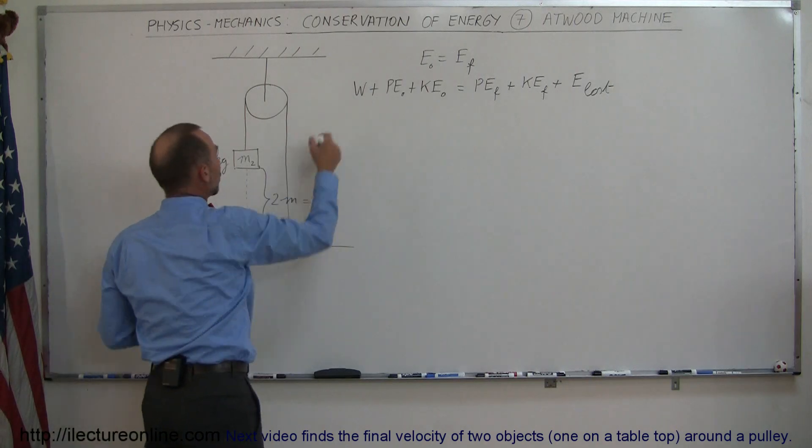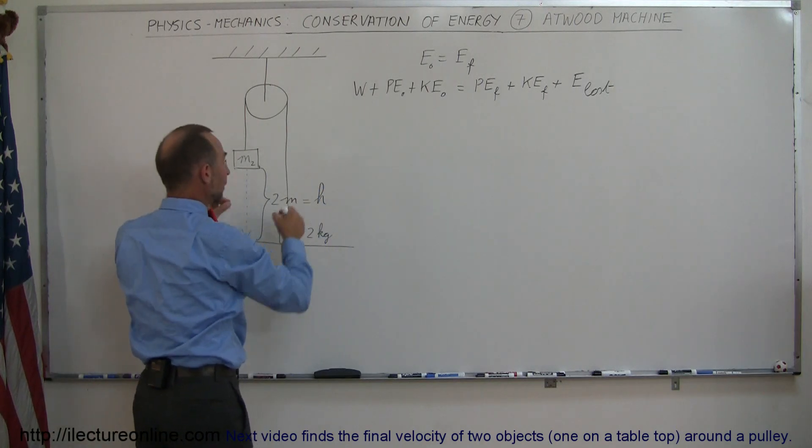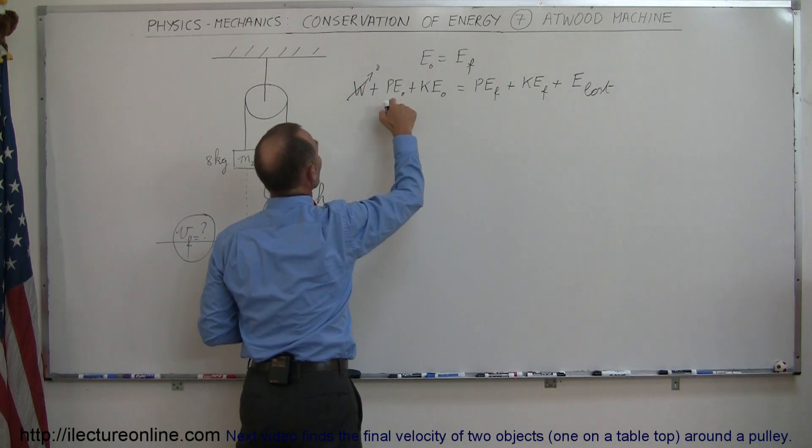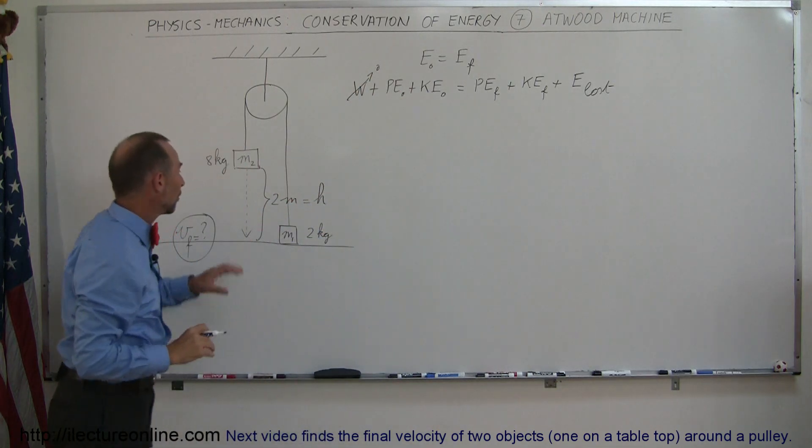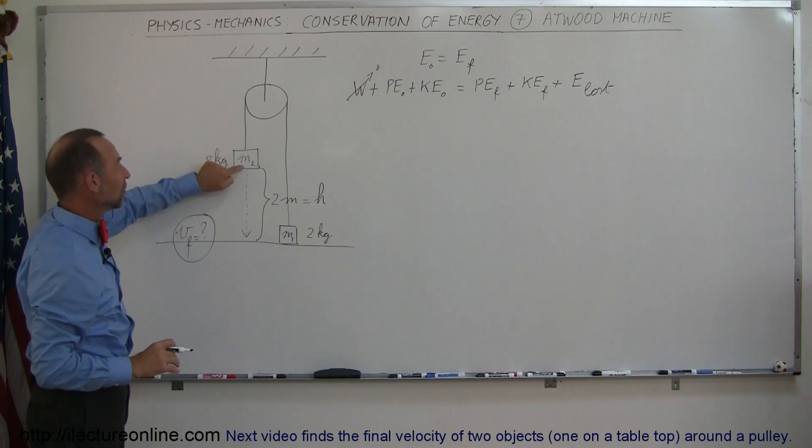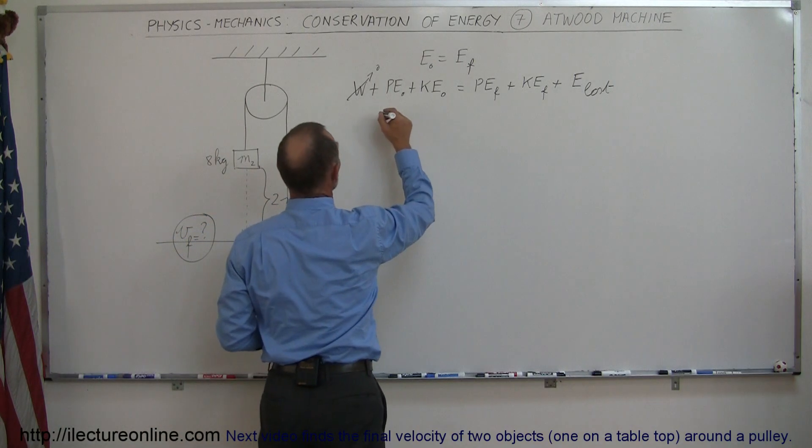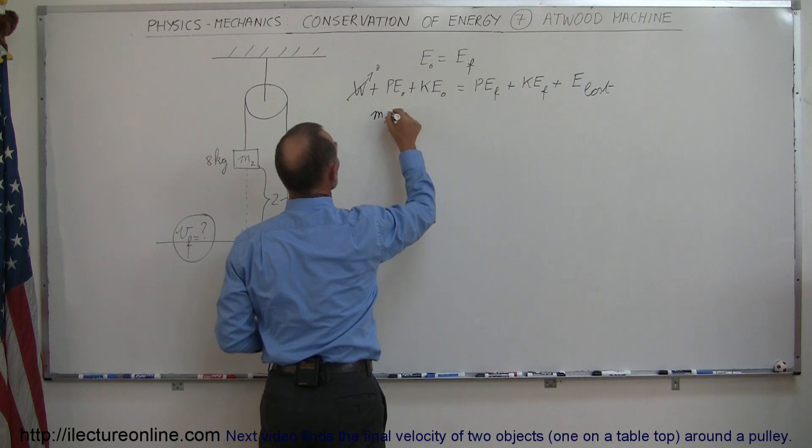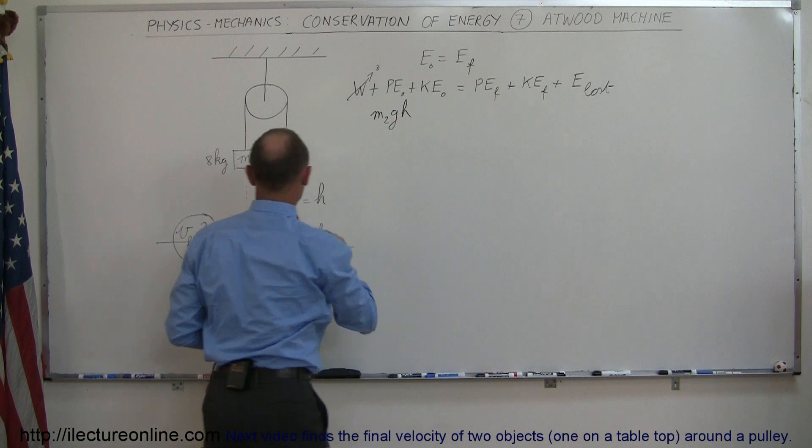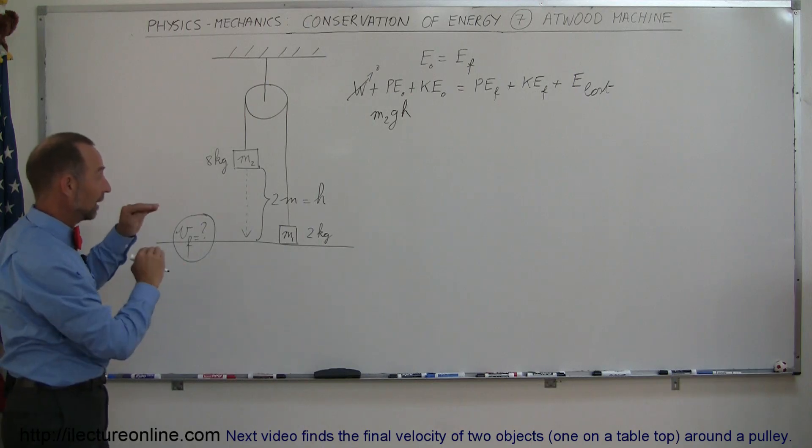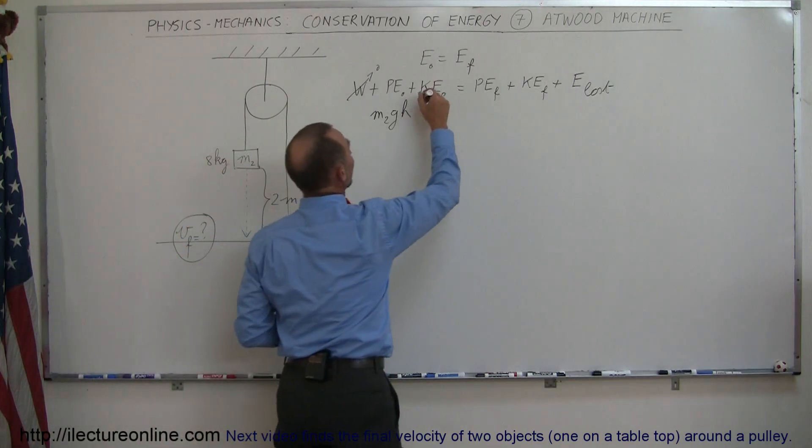So now we have to decide which of those we don't have. Is there any work being put in while the pulley is moving and the masses are moving? The answer is no, so that means this is zero. What is the initial potential energy? Well, that is provided by the large mass M2 being in this position starting out. So we can say that we have M2 times G times H, H of course being the 2 meters. Kinetic energy initially, it's starting from rest, so that would be zero.